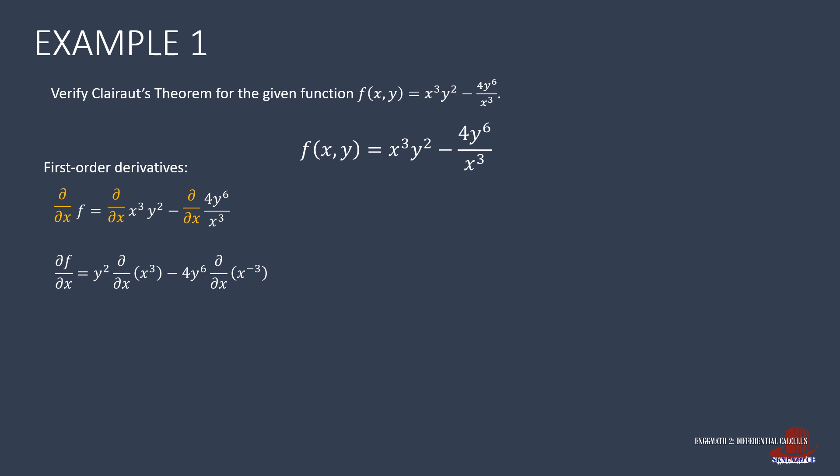The term x raised to negative 3 is the transformed form of 1 over x cubed. Moving on with the differentiation, we get y squared times 3x squared, minus the constant 4y raised to 6 times negative 3x raised to negative 4, and dx over dx equals 1. So the derivative reduces to 3x squared y squared plus 12y raised to 6 times x raised to negative 4, which can be written as the partial derivative of f with respect to x equaling 3x squared y squared plus 12y raised to 6 over x raised to 4.